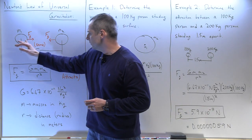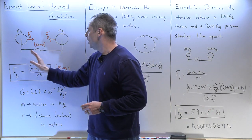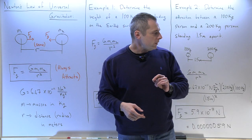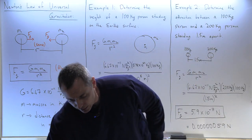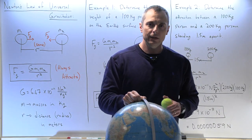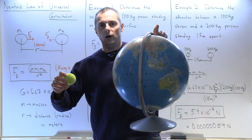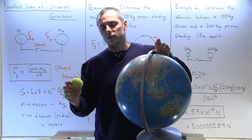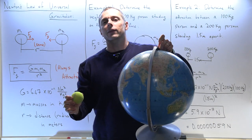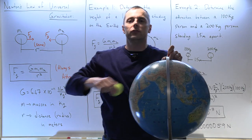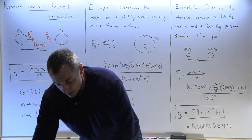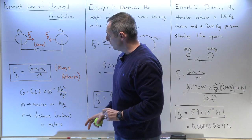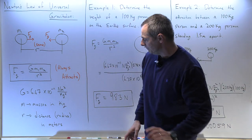A lot of people, if told two objects are two meters apart, say the radius is half that — one meter. No. The radius is always how far apart the objects are. When it comes to gravity, very often there's an orbit involved — a circular path — and the distance from one object to the other is the radius of that orbit, which is why we use the symbol r. Just take the distance and don't divide it by two.